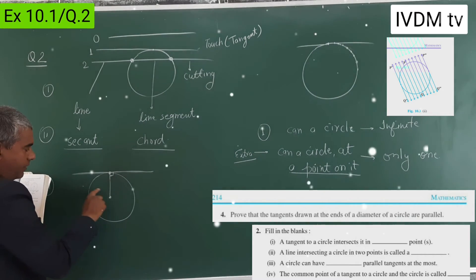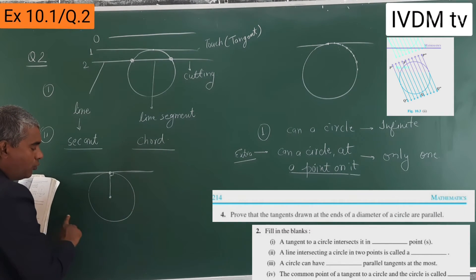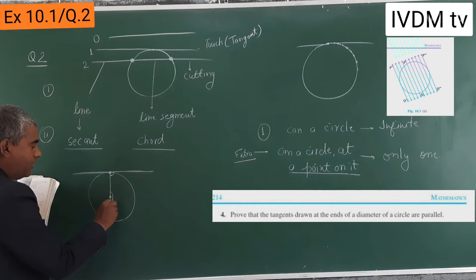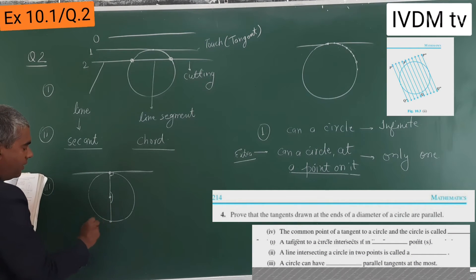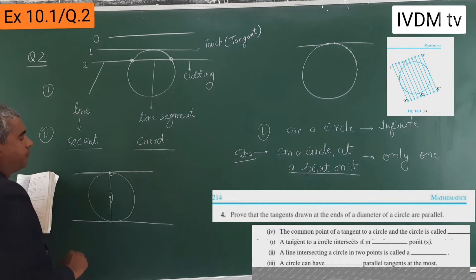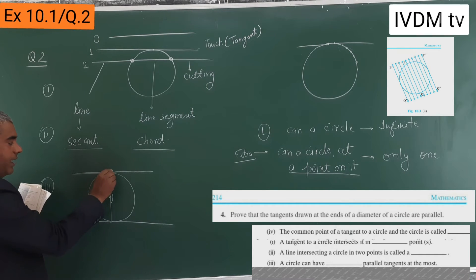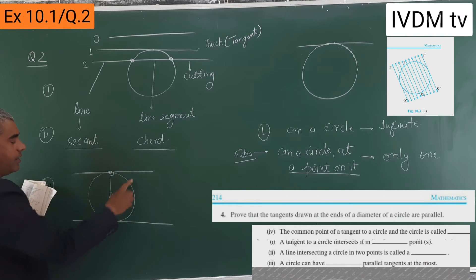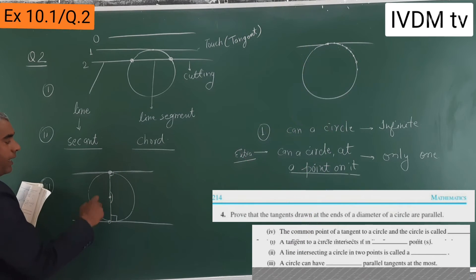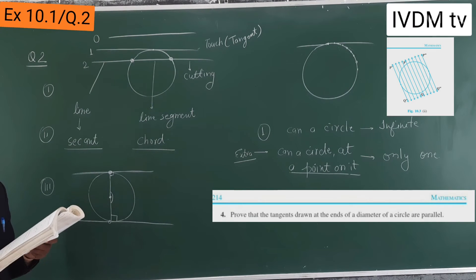So if you make another line, this will cut the circle at two points. If you extend it, this is 180 degrees, meaning diameter. So another point you will get here, where you will get a parallel tangent. So at the ends of a diameter — this is the end point of the diameter — tangents are possible. This is 90 degrees, this is 90 degrees. Tangents are parallel. So a circle can have two parallel tangents at the most.